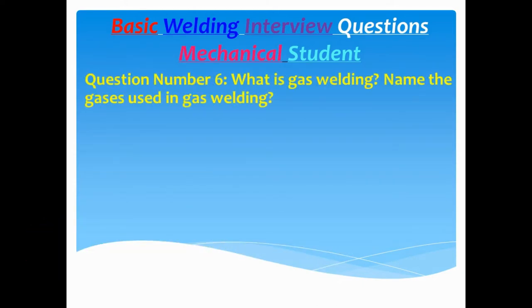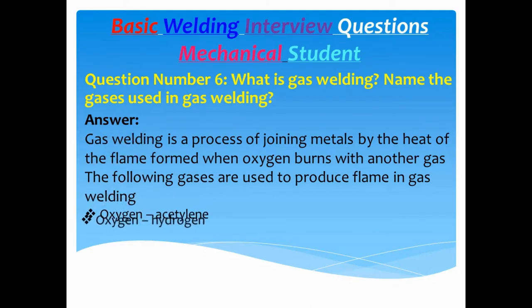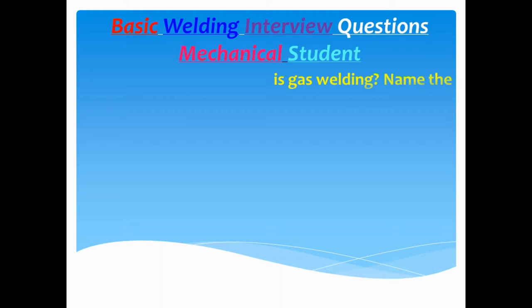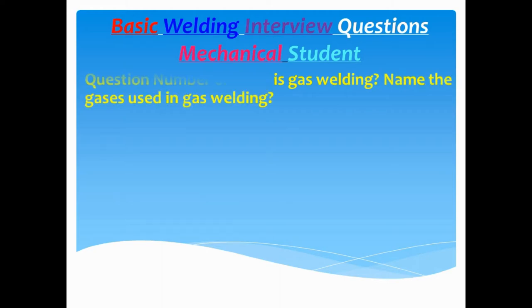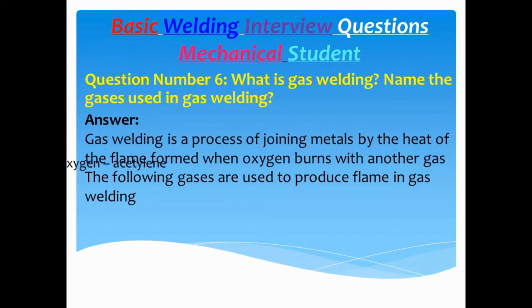Question number six: What is gas welding? Name the gases used in gas welding. Answer: Gas welding is a process of joining metals by the heat of the flame formed when oxygen burns with another gas. The following gases are used to produce flame in gas welding: oxygen, acetylene, oxygen-hydrogen, and air acetylene.